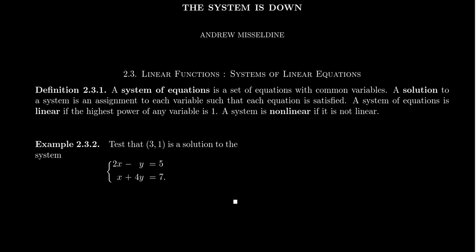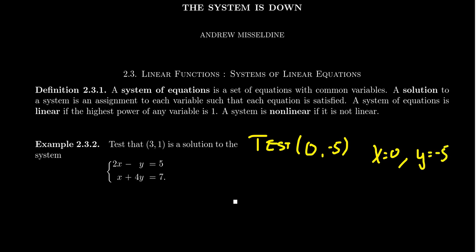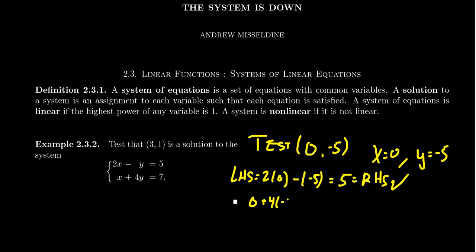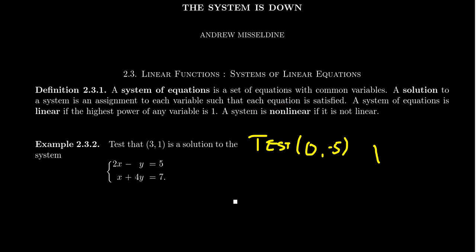Now let's test the point (0, negative 5), meaning x equals 0 and y equals negative 5. If we plug that into the first equation, the left-hand side becomes 2 times 0 minus negative 5, which simplifies to 5. That is the right-hand side, so it satisfies the first equation. But if we look at the second equation, 0 plus 4 times negative 5 gives us negative 20, which is not equal to 7. This is what's important: each equation must be satisfied by the assignment to count as a solution.